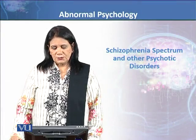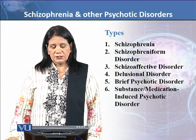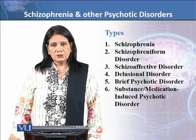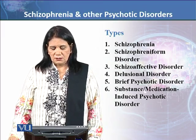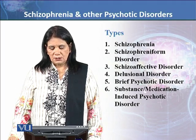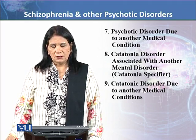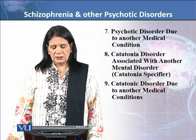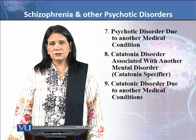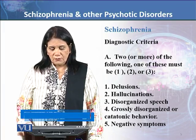Today we will talk about schizophrenia spectrum and other psychotic disorders. It has different types: schizophrenia, schizophreniform disorder, schizoaffective disorder, delusional disorder, brief psychotic disorder, substance or medication-induced psychotic disorder, psychotic disorder due to another medical condition, catatonic disorder associated with another mental disorder, and catatonia used as a specifier in psychotic disorders, as well as catatonia disorder due to another medical condition.